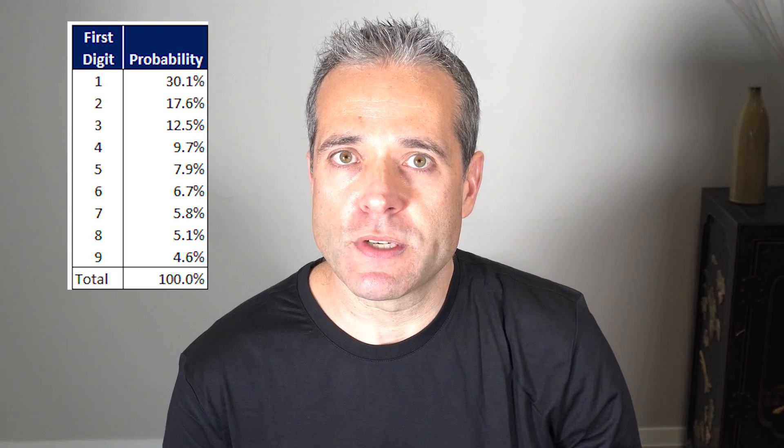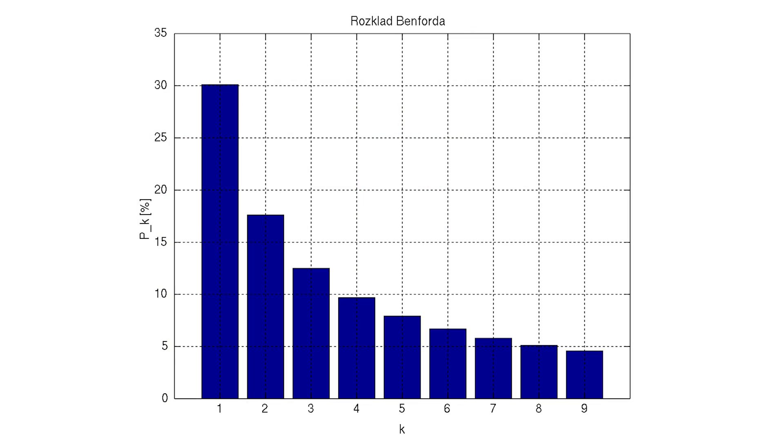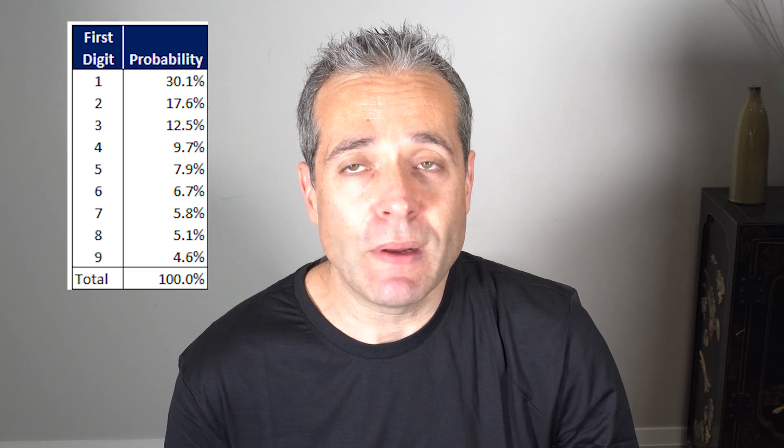Fraud examiners use Benford's law tests on natural numbers like payment amounts. The theory is that if a fraudster submits a fake invoice for payment, they're not going to submit invoices for $100 or $200 — they're going to go for the big bang and submit invoices for $900 or $800. If you do that enough times, it upsets the natural order of the way numbers should occur according to Benford. For example, if you run a Benford's law test on your monthly payments and find the first digit was nine in 35% of the payments, that's an anomaly. Benford's law says that nine should be the first digit only 4.6% of the time.